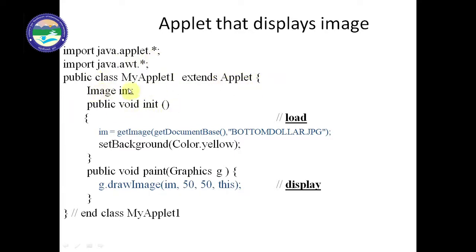We have defined one object of the Image class. This Image class is inside the applet package, and we are defining an object of this Image class. This is the init function, which is just like a constructor in the applet. Inside the init function we are writing the getImage function with getDocumentBase, and the name of the image file is bottomdollar.jpg. The getDocumentBase will access the image file from the directory.